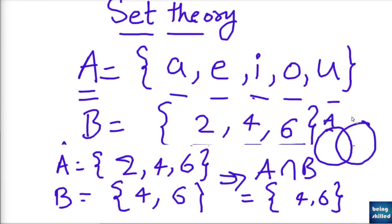If we are talking about Venn diagram, we can see this is A and this is B, and this area is intersection. So we will have 2 over here, and then 4 and 6 over here. So since 4 and 6 are common among A and B, it is the intersection. So A intersection B will have 4 and 6 as its values.